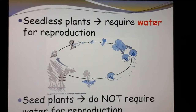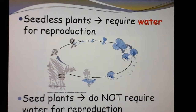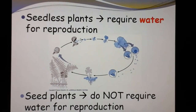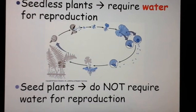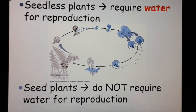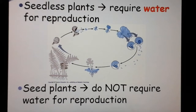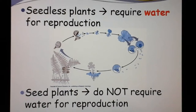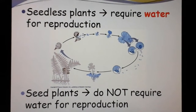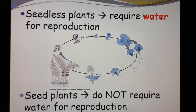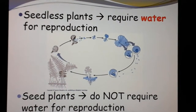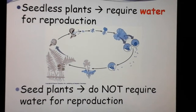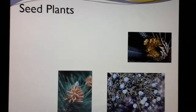Seedless plants still have to be in water to reproduce because they still have sperm that has to swim in water and the egg has to stay wet. But seed plants do not have to be near water because seed plants make pollen. Pollen has two cells inside of it, including a sperm cell, and the pollen keeps that sperm cell safe — it doesn't have to swim. It can be picked up by rain, water, an animal, or wind. So seed plants can grow in a whole bunch of different places.